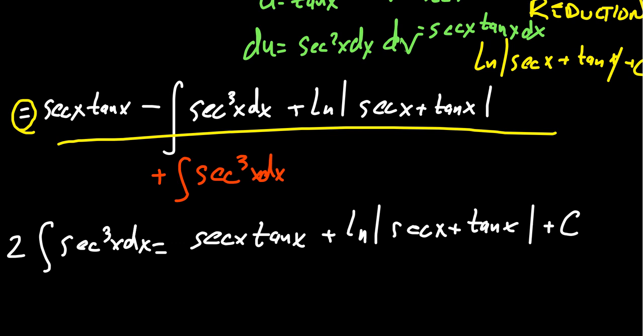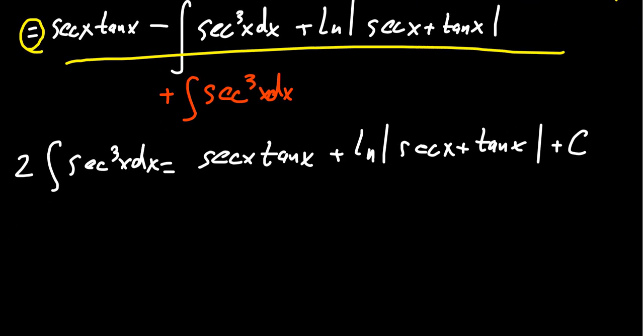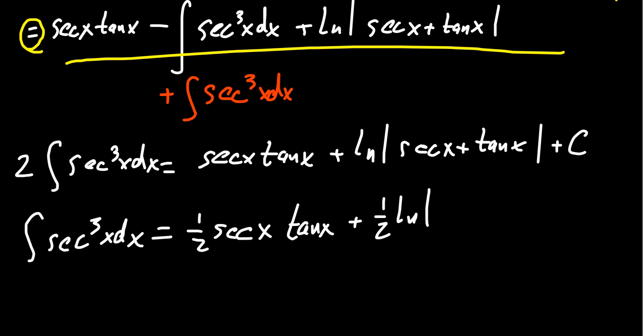To solve for the antiderivative, we're just going to divide both sides by two. So the integral of secant cubed x dx equals one-half the product of secant x tangent x plus one-half the natural log of the absolute value of secant x plus tangent x plus an arbitrary constant.